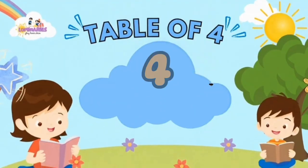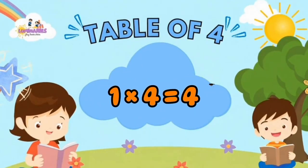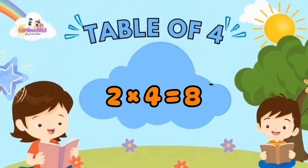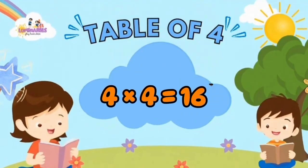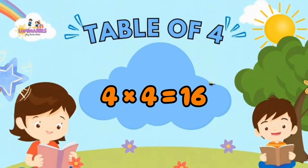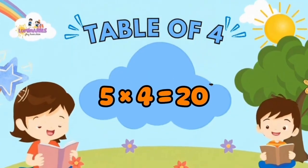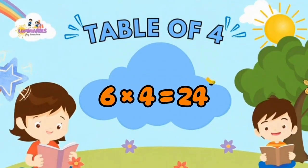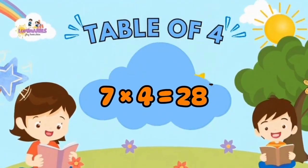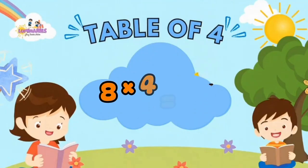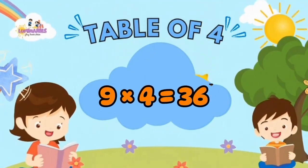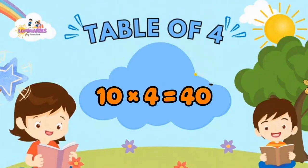Table of 4. 1 x 4 is 4. 2 x 4 is 8. 3 x 4 is 12. 4 x 4 is 16. 5 x 4 is 20. 6 x 4 is 24. 7 x 4 is 28. 8 x 4 is 32. 9 x 4 is 36. 10 x 4 is 40.